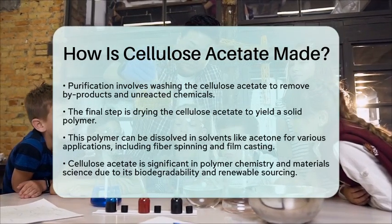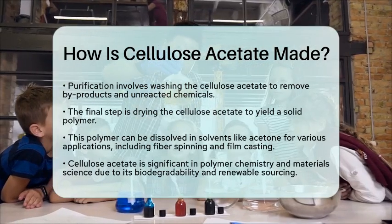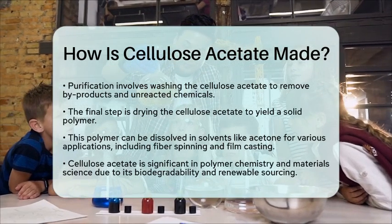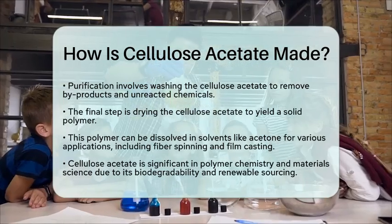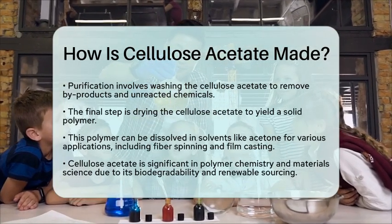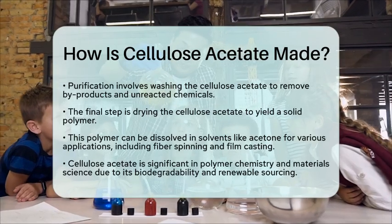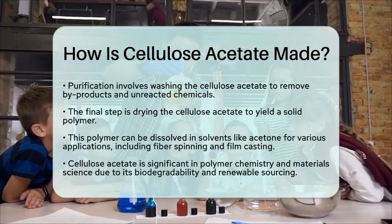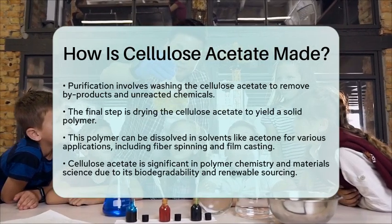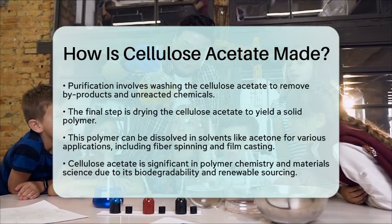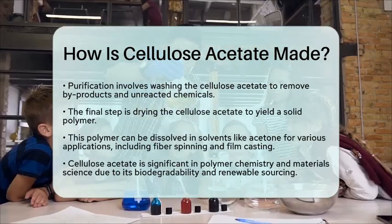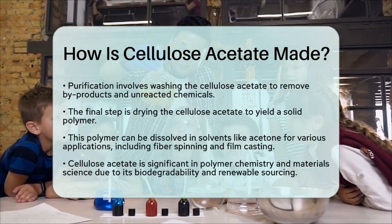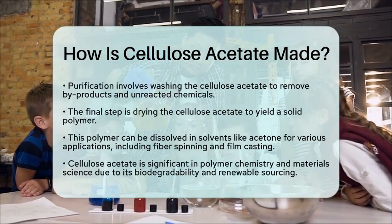In materials science, cellulose acetate has practical applications in textile fibers, photographic films, coatings, and membranes. Its biodegradability and renewable source make it an important material in both polymer chemistry and materials science. Understanding how cellulose acetate is made not only highlights its significance but also showcases the fascinating processes involved in transforming natural materials into useful products.